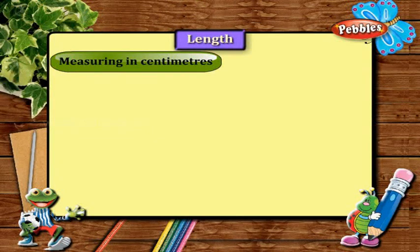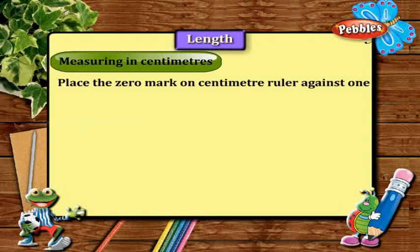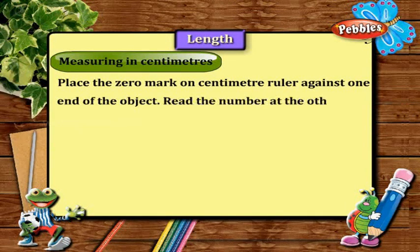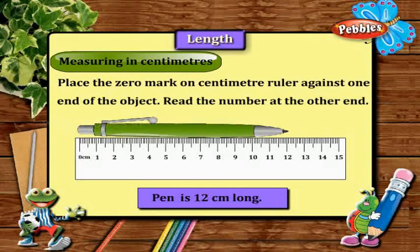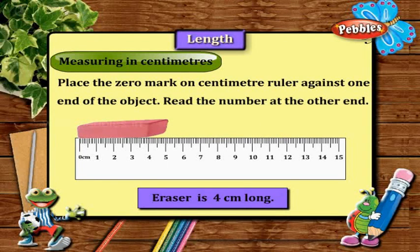Measuring in centimeters. Place the zero mark on the centimeter ruler against one end of the object and read the number at the other end. This pencil is 14 cm long. This pen is 12 cm long. This eraser is 4 cm long.